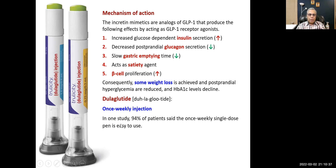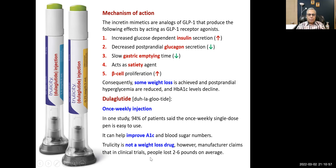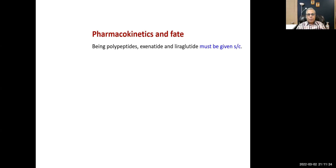Dulaglutide is a once-weekly injection; 94 percent of patients find it more convenient. It can help improve HbA1c and fasting blood glucose. It is not a weight loss drug, but 2–6 pounds on average are lost. DPP-4 inhibitors have an almost similar mechanism of action but do not cause any weight loss — that is the key difference.